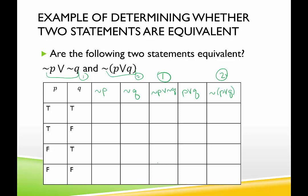Let's look. We have P is true, true, false, false, and Q is true, false, true, false. Not P — the negation — will be false, false, true, true. Not Q will be false, true, false, true.